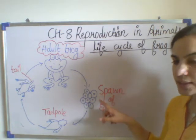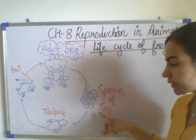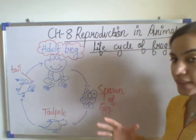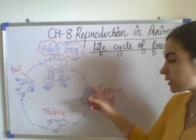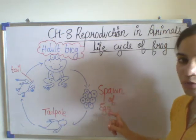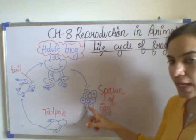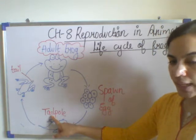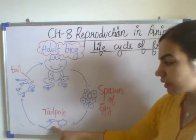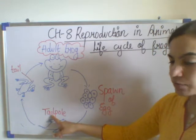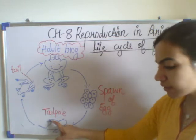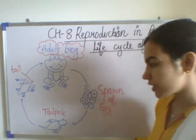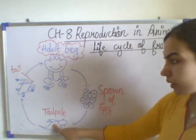We can call it a spawn of eggs — so many eggs are present together in a cluster. Now from this egg, the tadpole comes out. This tadpole looks like a fish because it has fins, just like a fish.